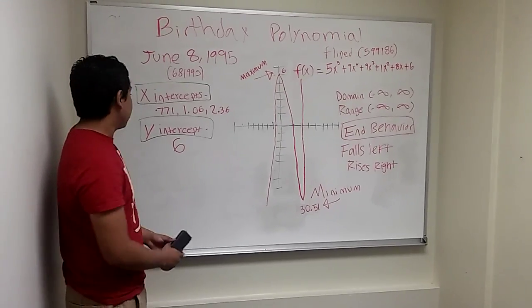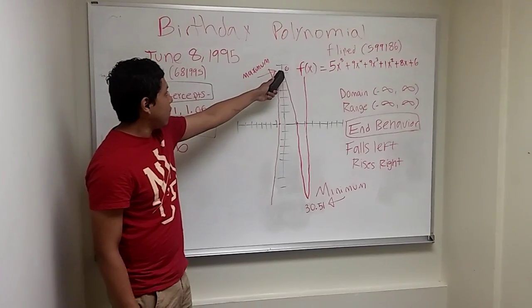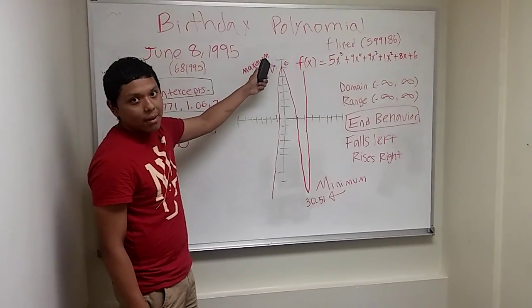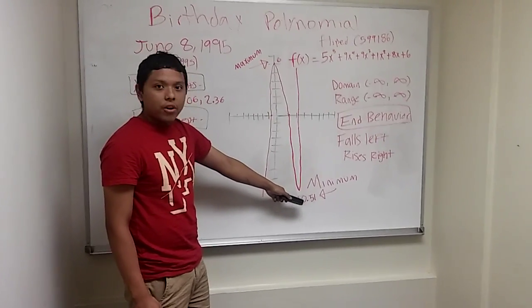Those are the three x-intercepts. The y-intercept is positive 6, and you can see it here. That's actually also the maximum point of the graph. The minimum point of the graph is negative 30.51.